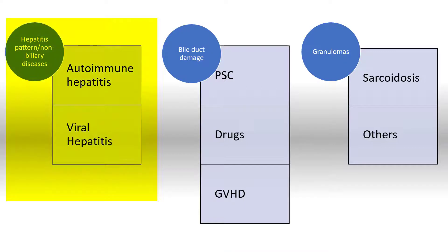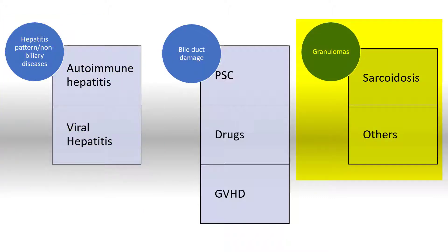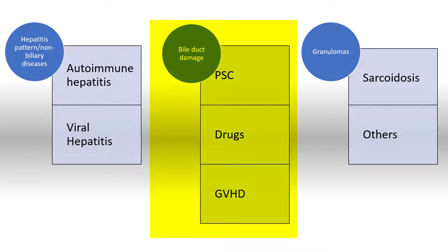The first group is the hepatitis pattern that mimics PBC. We talked about autoimmune hepatitis, but there are other forms of hepatitis that can also damage the bile duct. Then there are granulomas — granulomas in the liver raise a relatively broad differential diagnosis; we'll focus on sarcoidosis, but any granulomatous disorder could potentially mimic PBC. And finally, diseases that can damage the bile duct — a relatively long list, and I'm going to show you just three potential diagnoses.